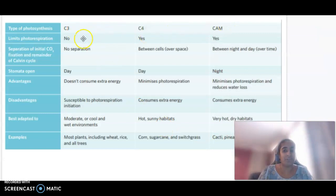For C3 plants, there's no limit on photorespiration. There's no separation of initial carbon dioxide fixation. Stomata open during the day. Advantages: doesn't consume extra energy. Disadvantages: susceptible to photorespiration initiation. Best adapted to moderate or cool and wet environments. Examples include wheat, rice, and all kinds of trees.